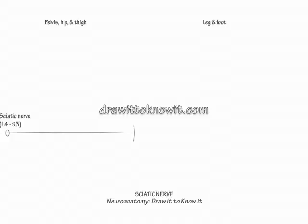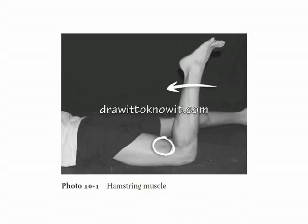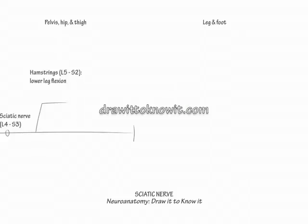Show the sciatic nerve innervates the hamstring muscle group. To demonstrate its action, flex your leg at the knee. Note that the tibial component innervates all of the hamstring muscles except for the short head of the biceps femoris, which the peroneal nerve innervates.